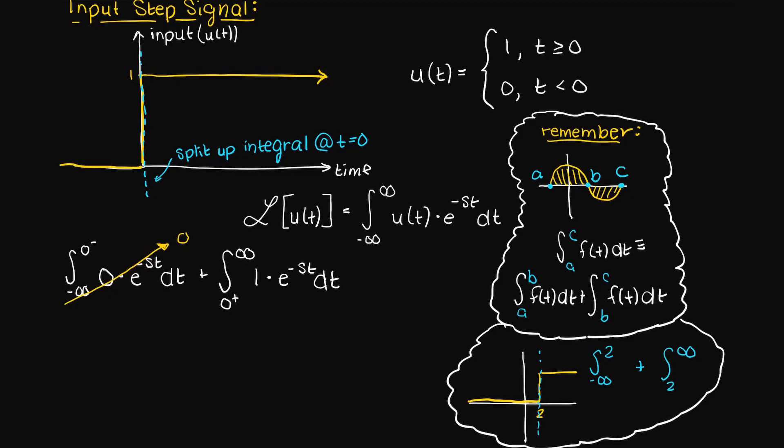However it is the exact same thing. The left integral is going to go to zero, as we can move our zero outside and no matter what anything multiplied by zero is, it's just going to be zero. Therefore, now let's focus our efforts on the more interesting portion, where the input signal turns on.